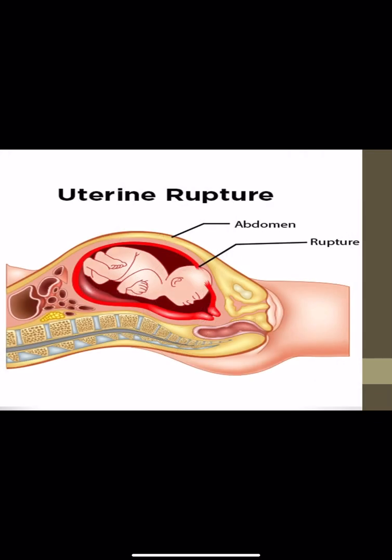Uterine rupture is one of the extraplacental causes of antepartum hemorrhage. This is due to weakness in the uterus and difficult labor. By weakness, we mean there is a scar in the uterus — a previous cesarean section scar or previous myomectomy scar — combined with difficult labor, leading to rupture of the uterus.